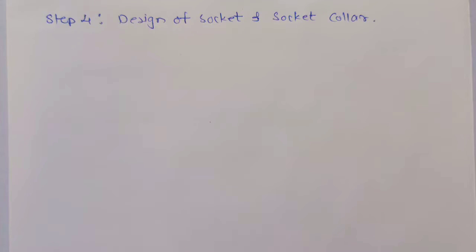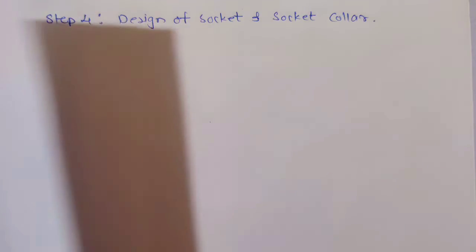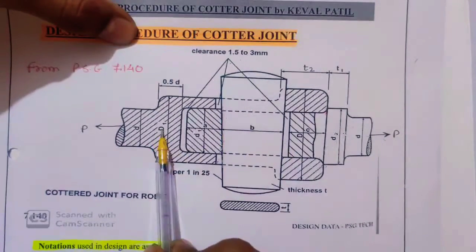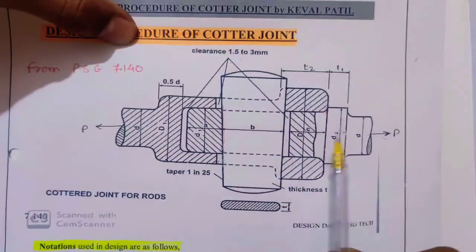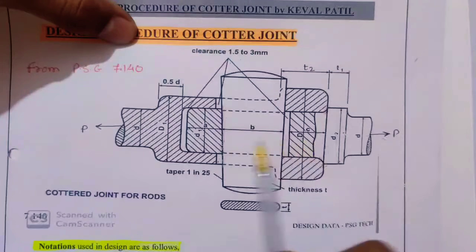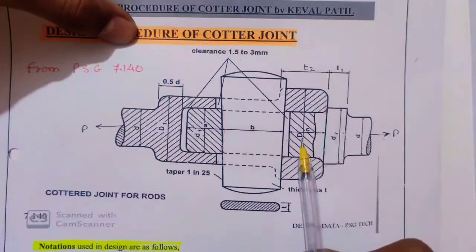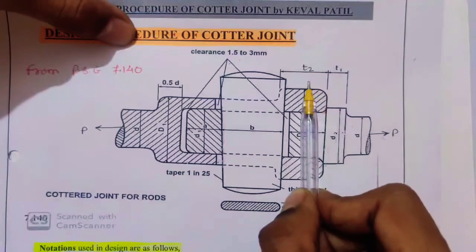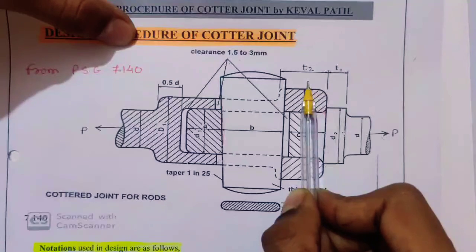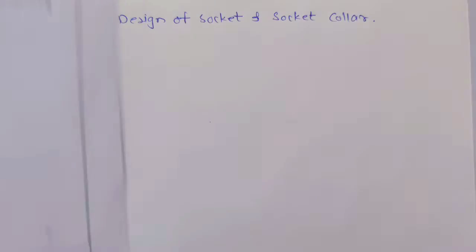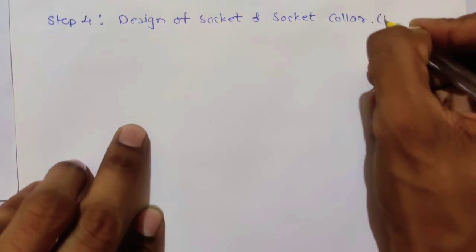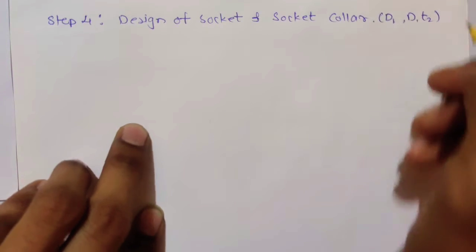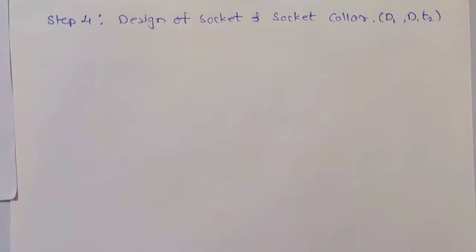I am taking socket and socket collar together. The dimensions remaining are D1, D, and D2 — only three dimensions remaining. So three dimensions, three formulas.